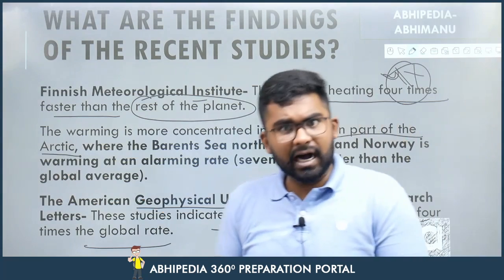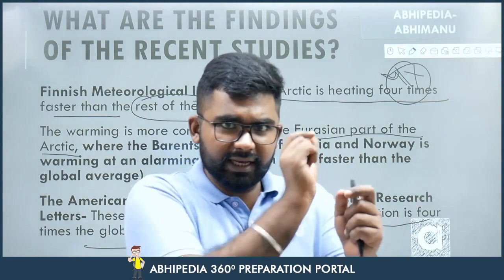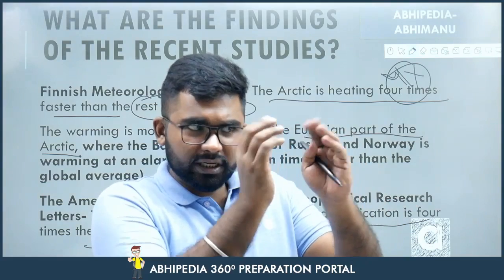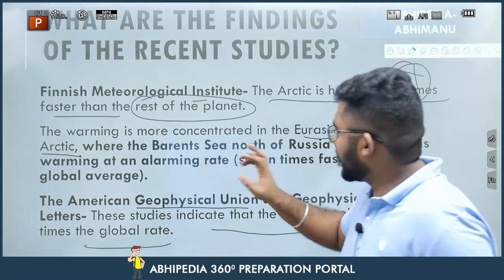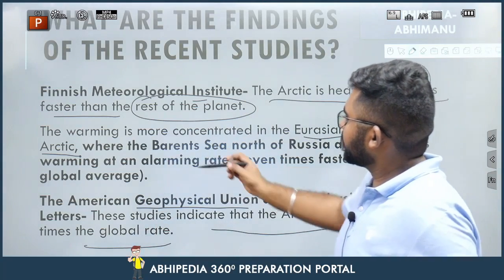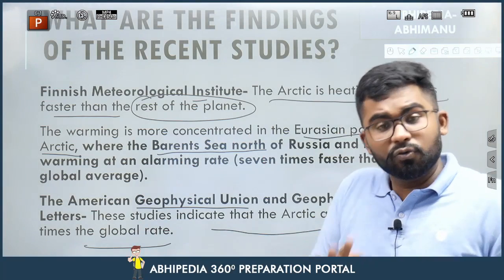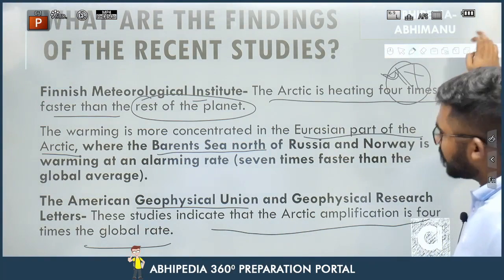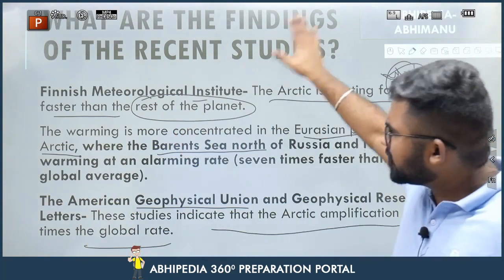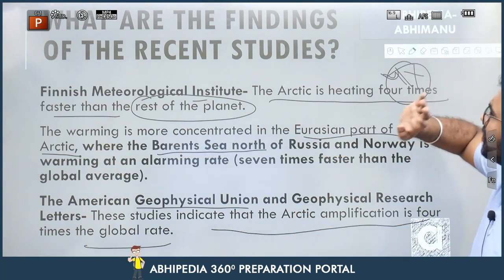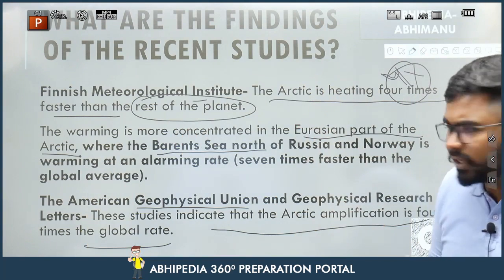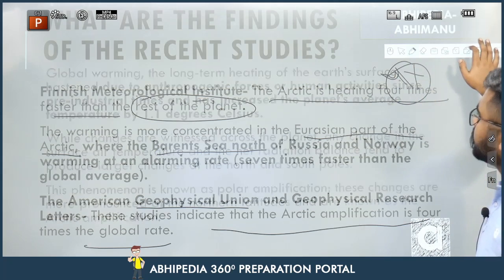Let me help you visualize the Eurasian region of the Arctic. If you look at the Arctic Circle and its Eurasian part, we'll see that the Barents Sea is the area that comes there. I'll show you the map at the end, since map-based questions also come in UPSC. This is the context — what is Arctic Amplification, why are you reading this, and why might a question be asked on it?